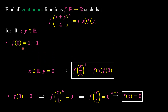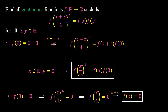In the case f(0) equals 1 or minus 1, if we take any real number and substitute x equal to s + t into the functional equation, we have f((s + t)/4) to the power of 4 equal to f(s + t) times f(0). Since f(0) is equal to 1 or minus 1, this quantity equals plus or minus f(s + t).